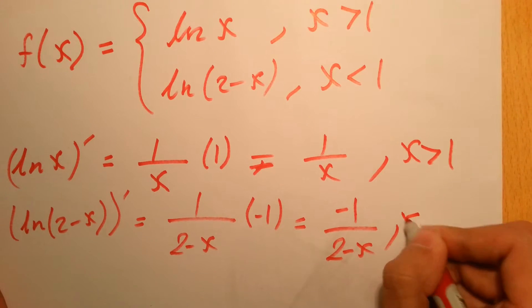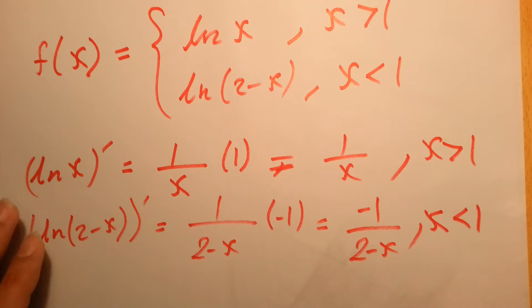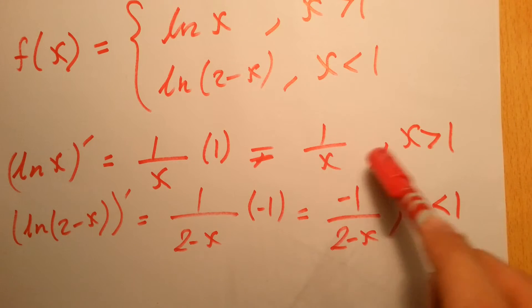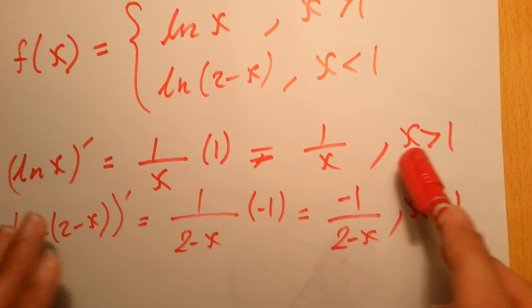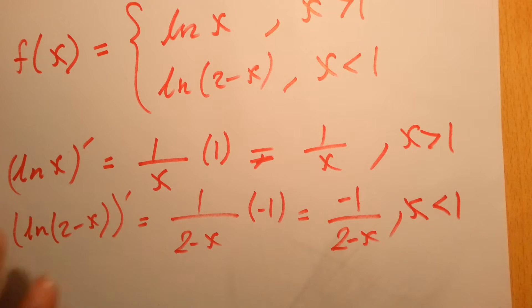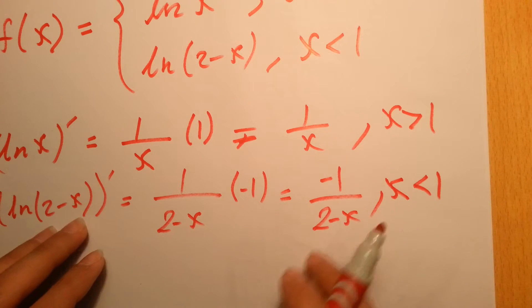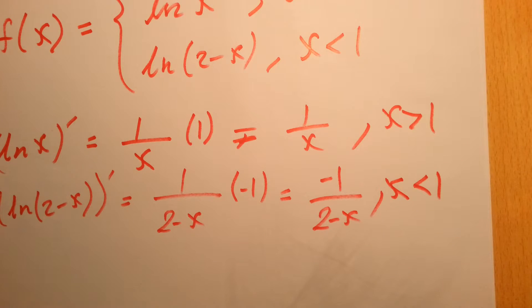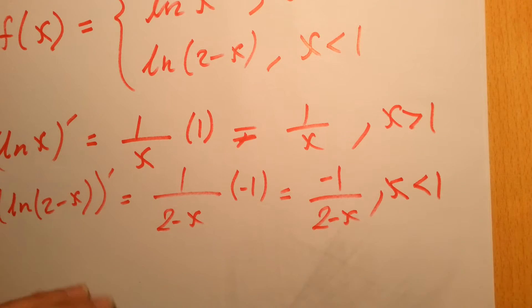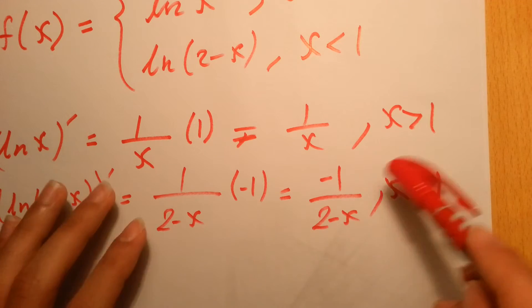Let's check if it's continuous and if it's differentiable on all values. For x greater than 1, this part should not equal 0, and already x is greater than 1, so we are in the safe side. This part should not equal 2, and it's already less than 1, so it's continuous.